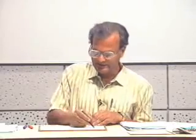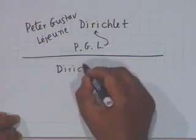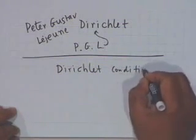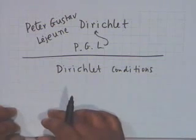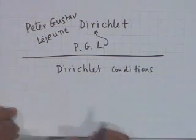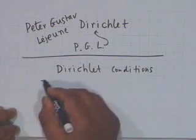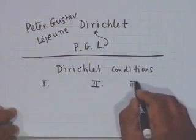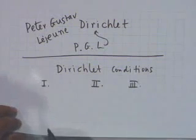Dirichlet took up the annoying questions of the existence of Fourier series and came up with a set of sufficient conditions — again, only sufficient, not necessary and sufficient. These go in the literature as the Dirichlet conditions. There are three of them, which I shall explain but not prove, as the proof is beyond the scope of this class. Together, the three conditions are sufficient for the existence of Fourier series.